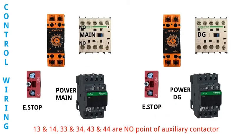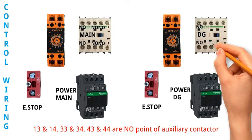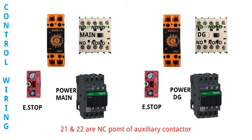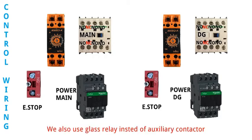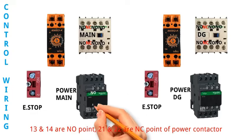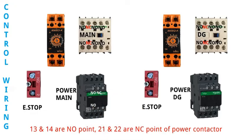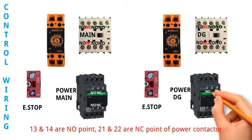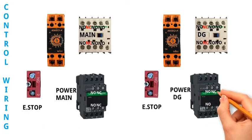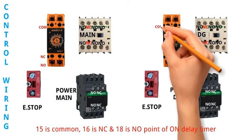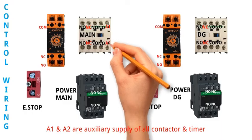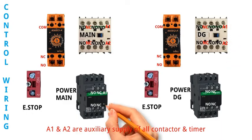The auxiliary contactor has NO points at 13-14, 33-34, and 43-44, and NC point at 21-22. We also use a glass relay instead of auxiliary contactor, with NO point at 13-14 and NC point at 21-22 of the power contactor. For the on-delay timer: 15 is common, 16 is NC, and 18 is NO point. A1 and A2 are auxiliary supply terminals for all contactors and timers.